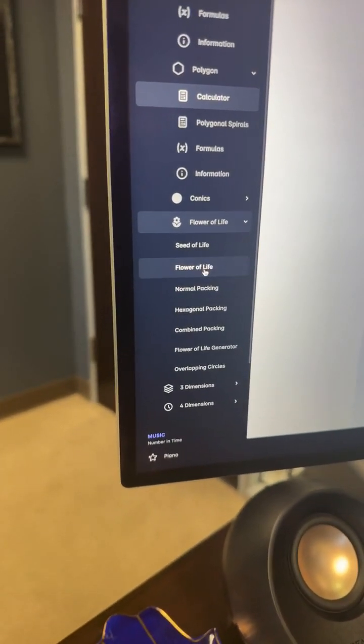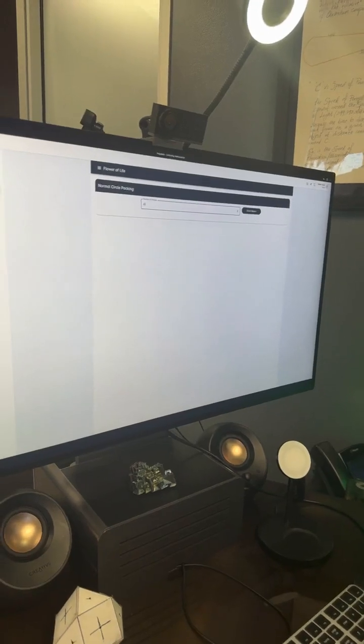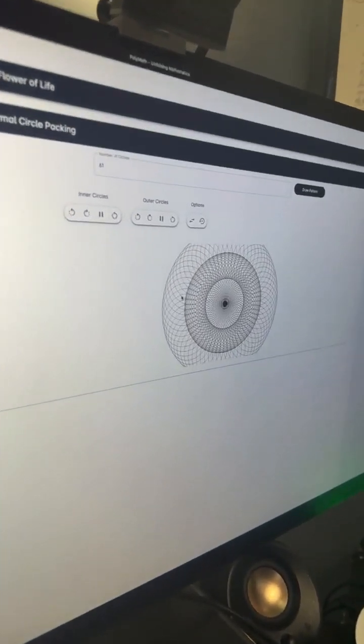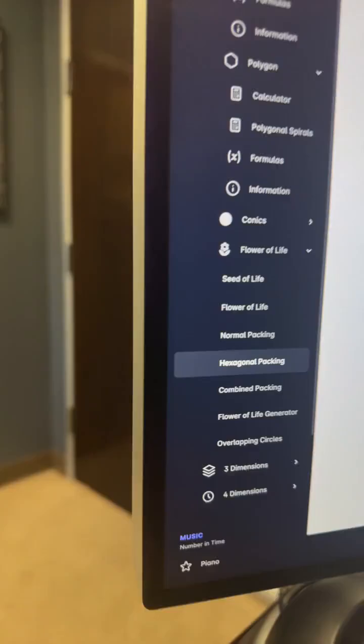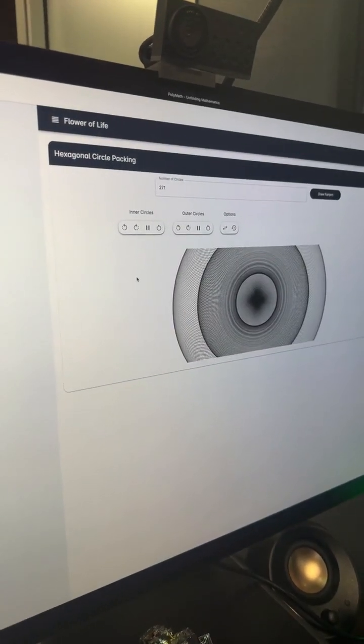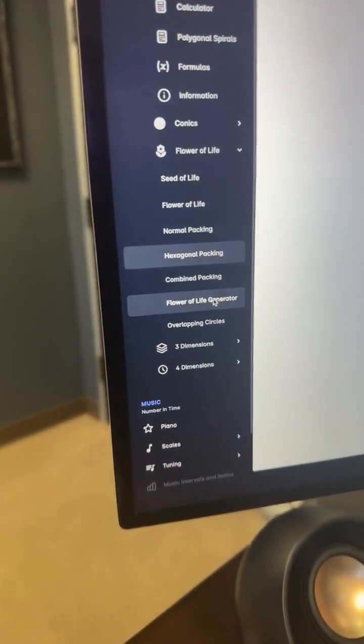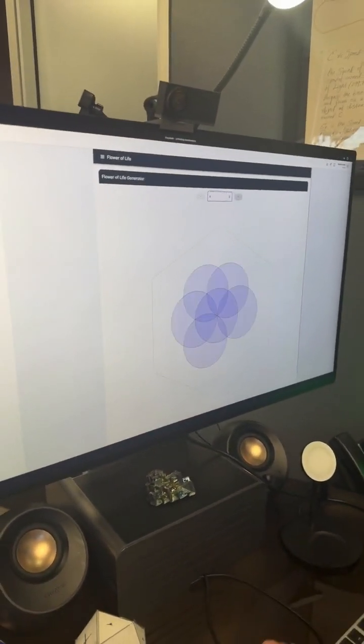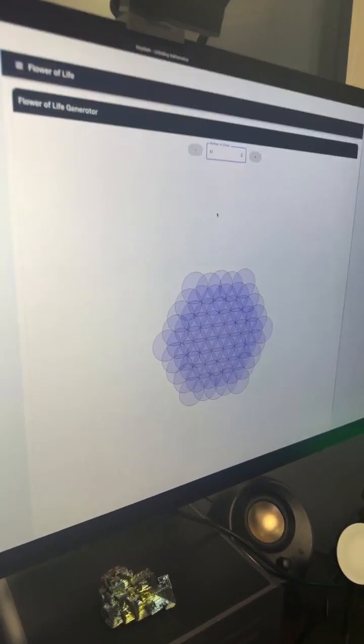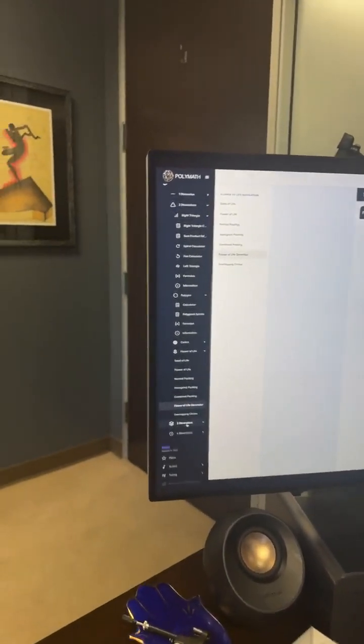And in addition, we can look at even the Flower of Life. This is kind of cool. So we can create Flowers of Life from this also and do normal packing on this. So the number of circles I want to put here is 61. So now I've got a Flower of Life pattern that's creating this inner and outer circle relationship. And in addition, I can look at basic things like the Seed of Life and the Flower of Life and hexagonal packing of it. So number of circles, 271. This is basically giving us a much larger version of this. And you can look at all the different options of this, swap the colors. You could do all kinds of stuff with this.